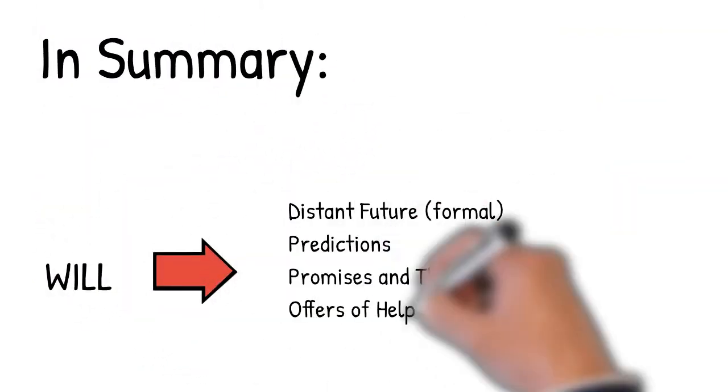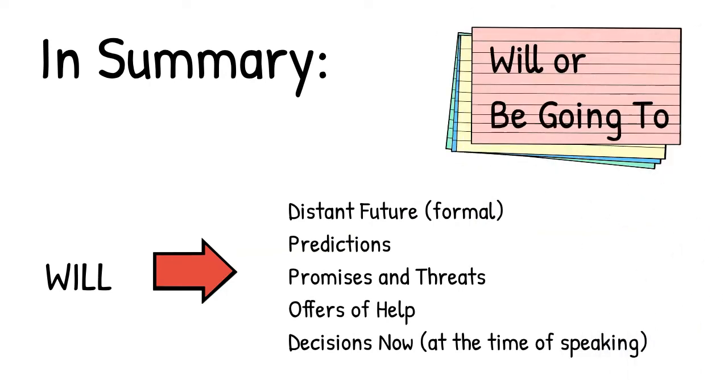Okay, in summary, will is used for the following situations. Distant future, especially informal situations, predictions, promises, and threats, offers of help, and decisions made now.